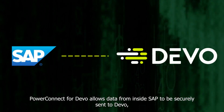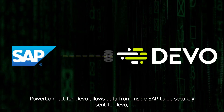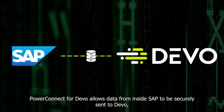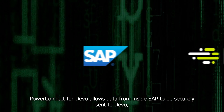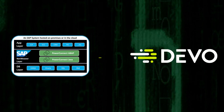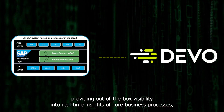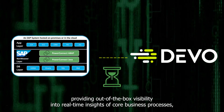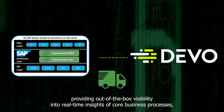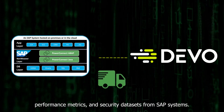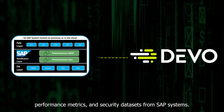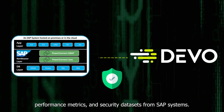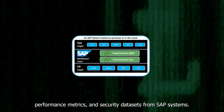PowerConnect for Devo now allows data from inside SAP to be securely sent to Devo, providing out-of-the-box visibility into real-time insights of core business processes, performance metrics, and security datasets from SAP systems.